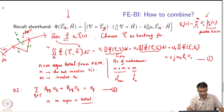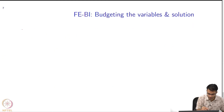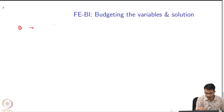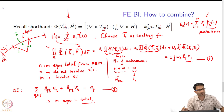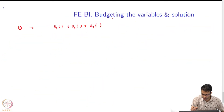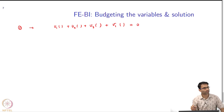Let us rewrite equation 1. Equation 1 is going to be of the form: there is going to be u1 something plus u2 something plus u3 something, and this term over here — plus v1 something — equal to 0.